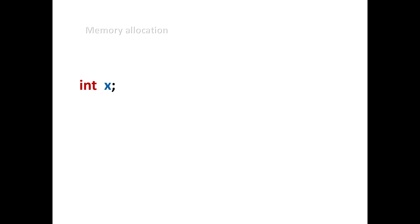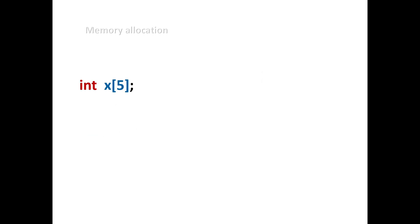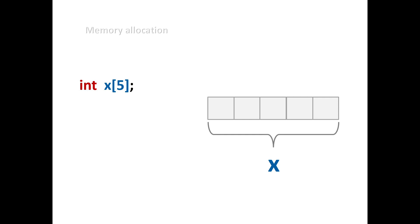How does memory allocation happen? In earlier videos we saw that a regular variable like integer x occupies a certain memory location, and the value assigned is stored there. If we do x = x + 2, it adds 2 to the stored value. But in case of an array — when we declare integer x of size 5 — storage is occupied in a continuous allocation, as you can see on the screen.